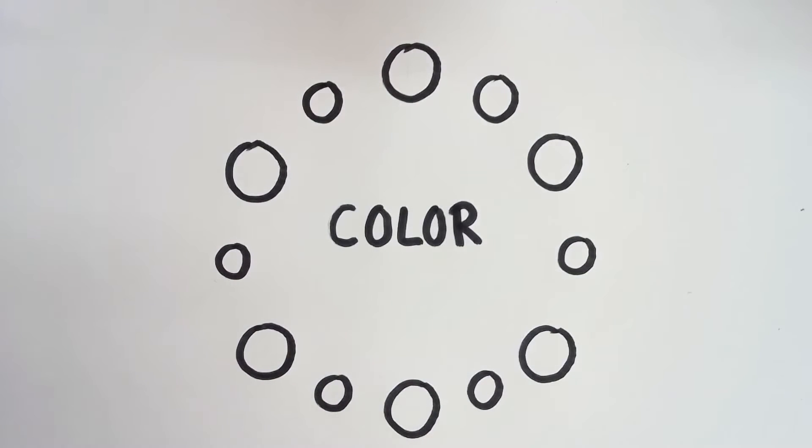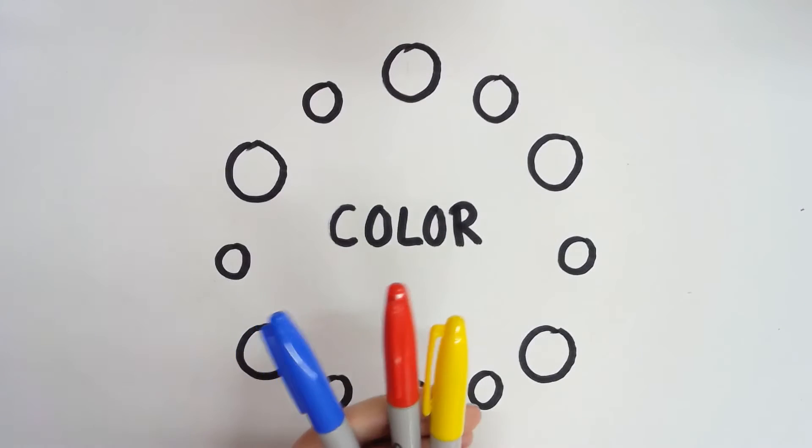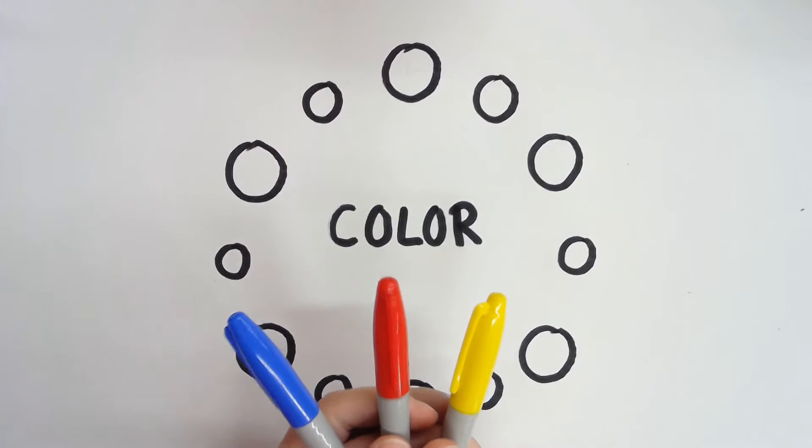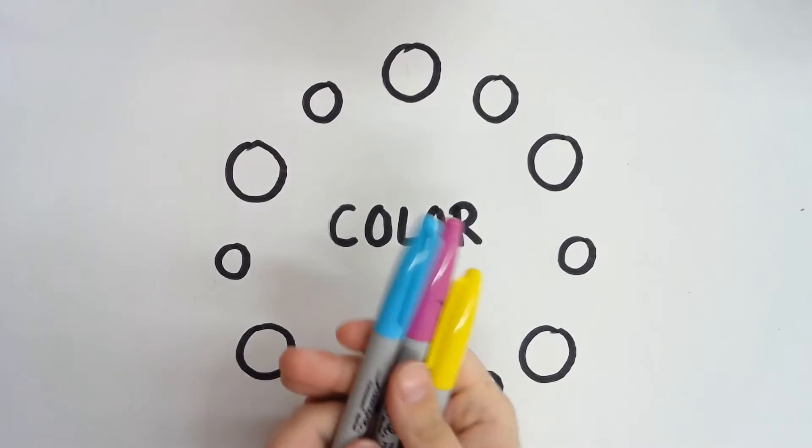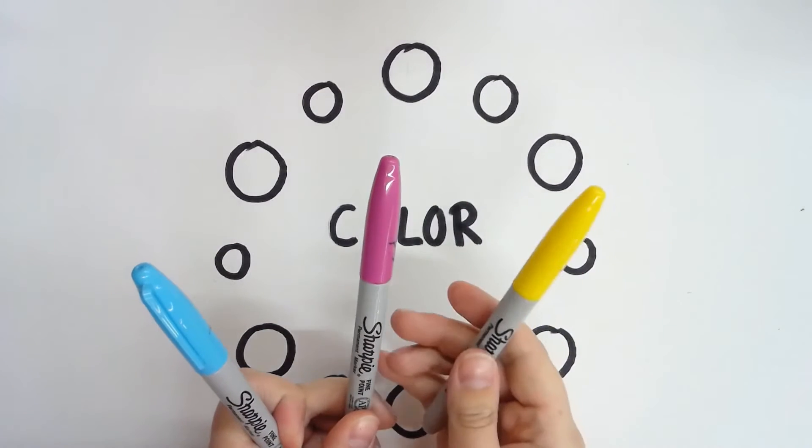In grade school, even I learned that the primary colors are blue, red, and yellow. And you're going to be quite surprised because those are not the primary colors. The primary colors are cyan, magenta, and yellow.